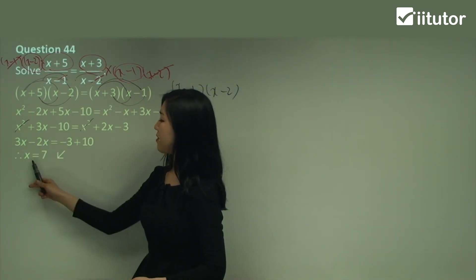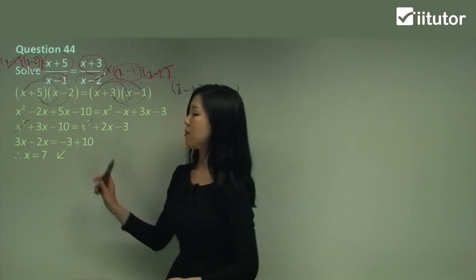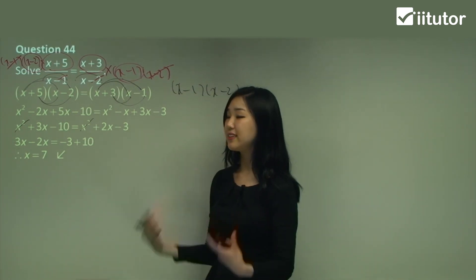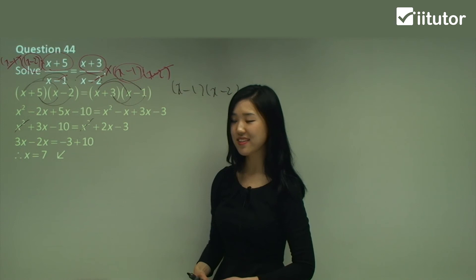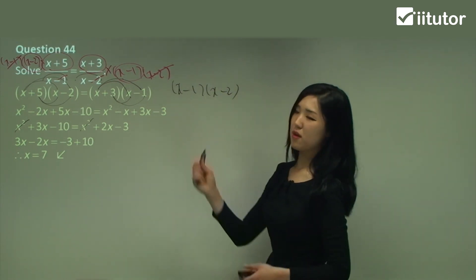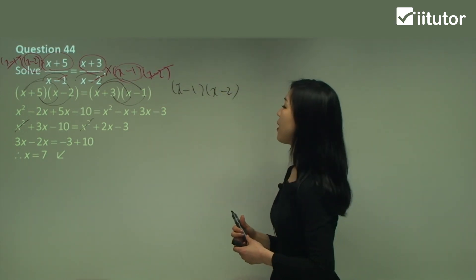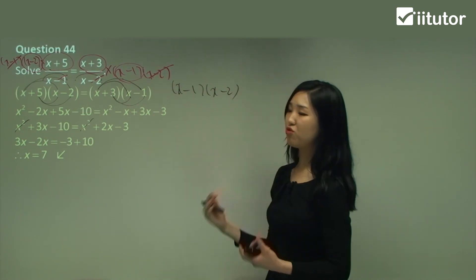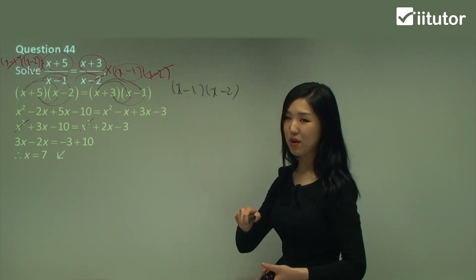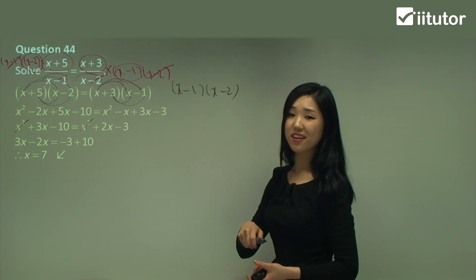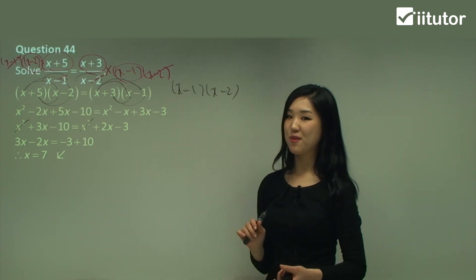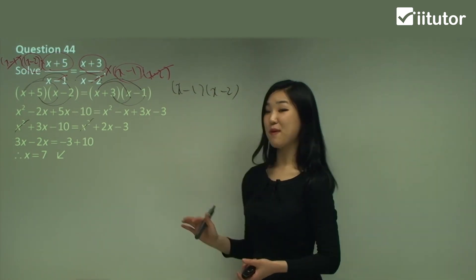So 3x minus 2x is x. And negative 3 plus 10 is 7. So x is 7 — that's the answer. The first part might have been a little bit confusing, but just multiply everything by the same term and cancel out whatever is common. Be careful with this kind of expansion as well. So that concludes this part.